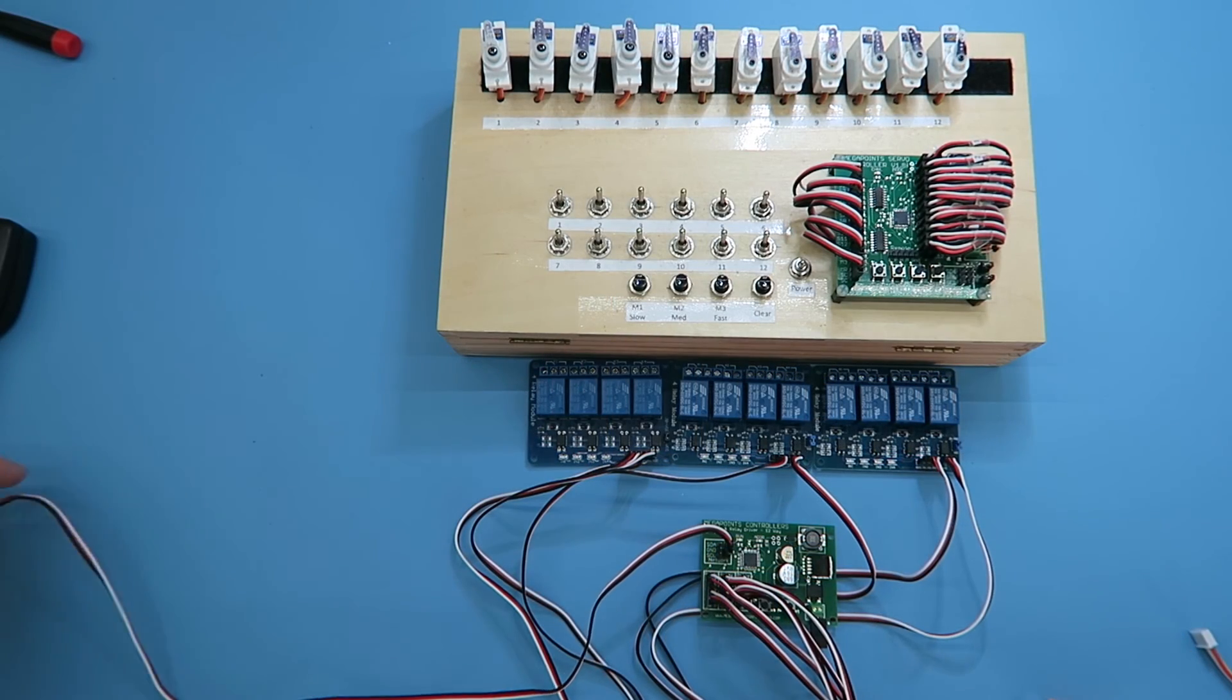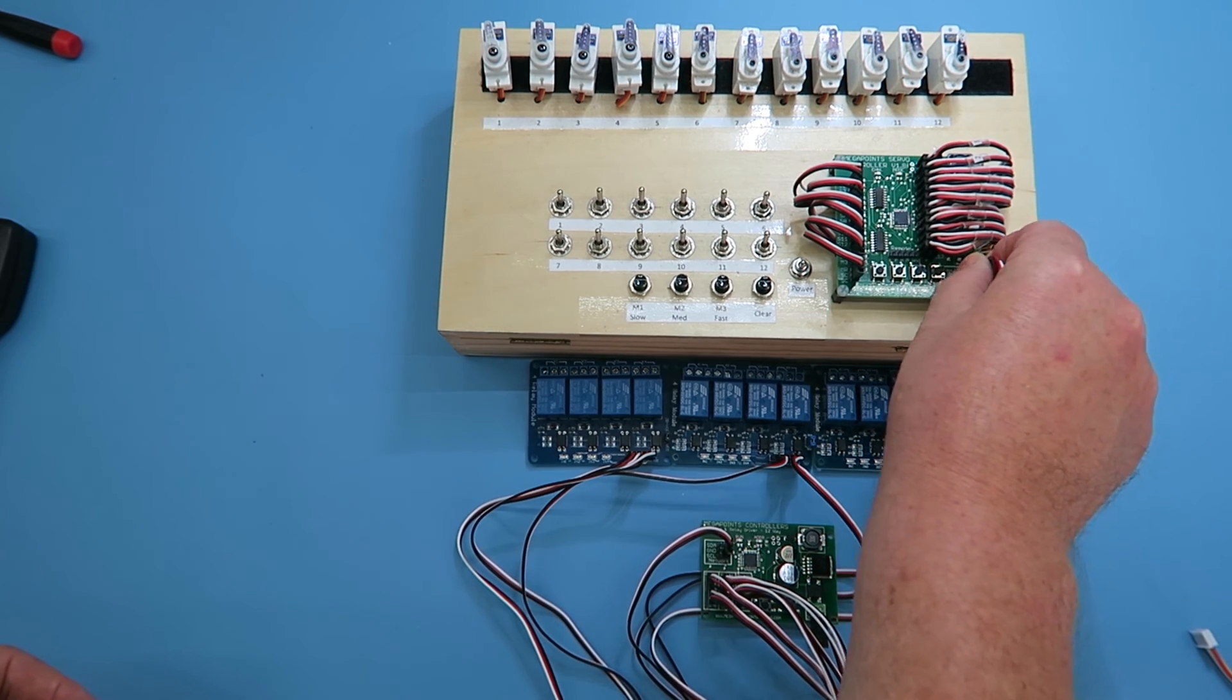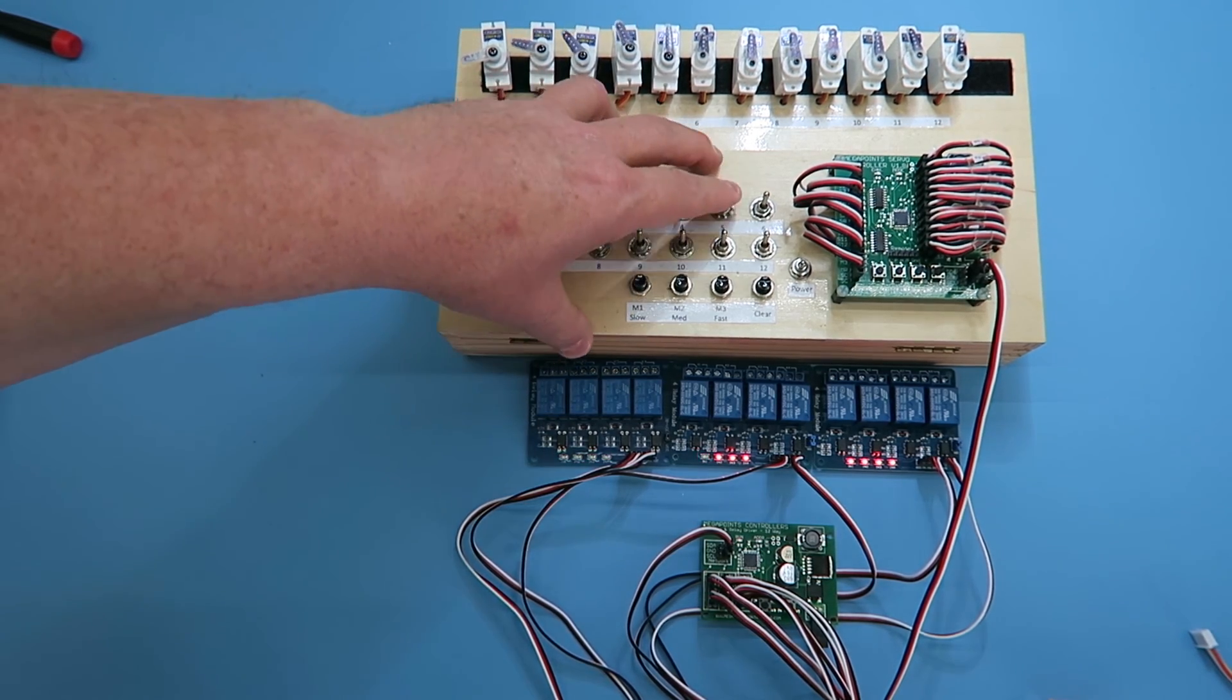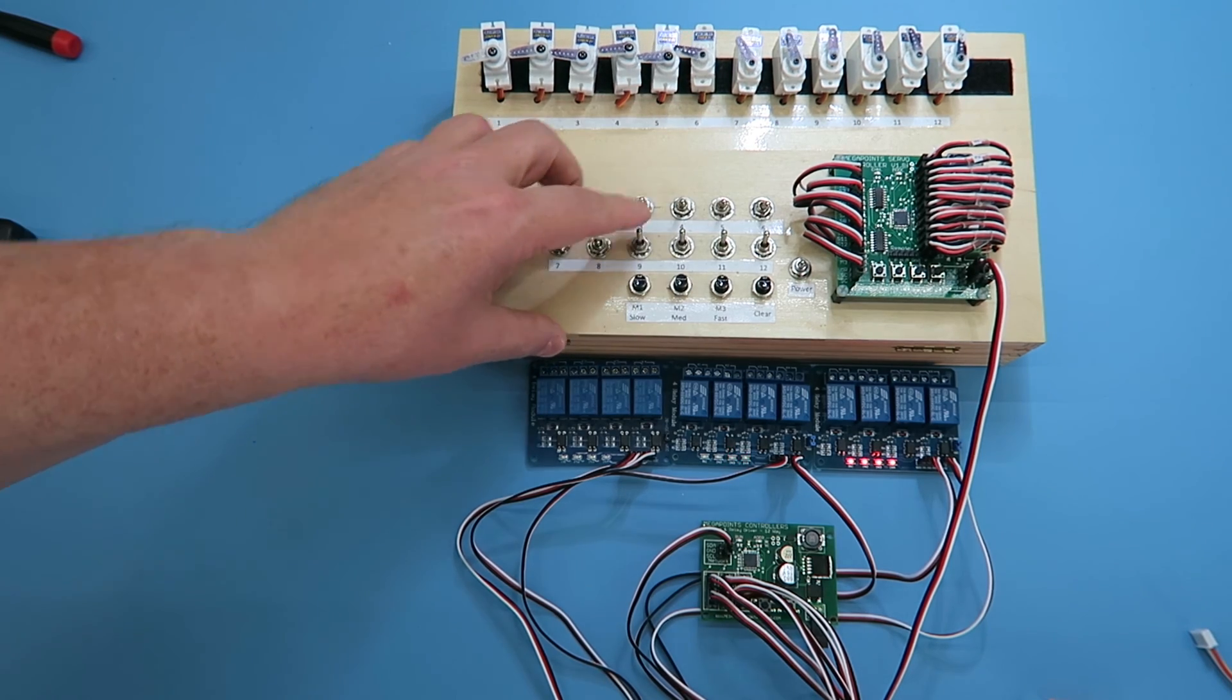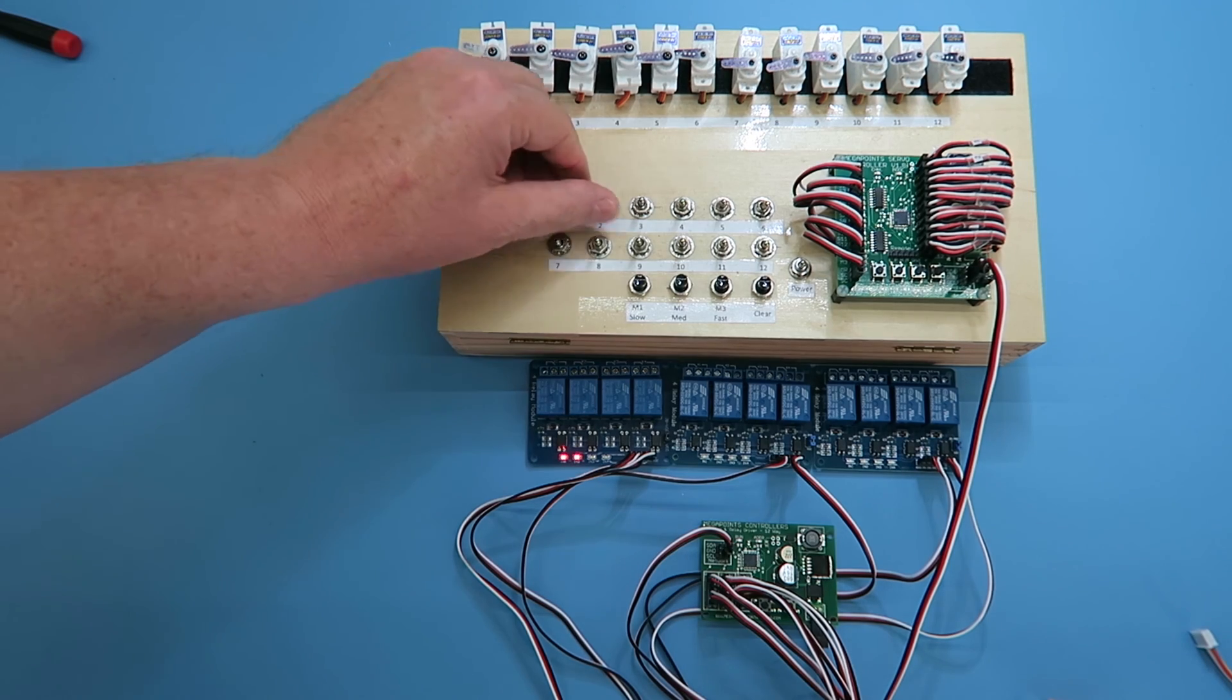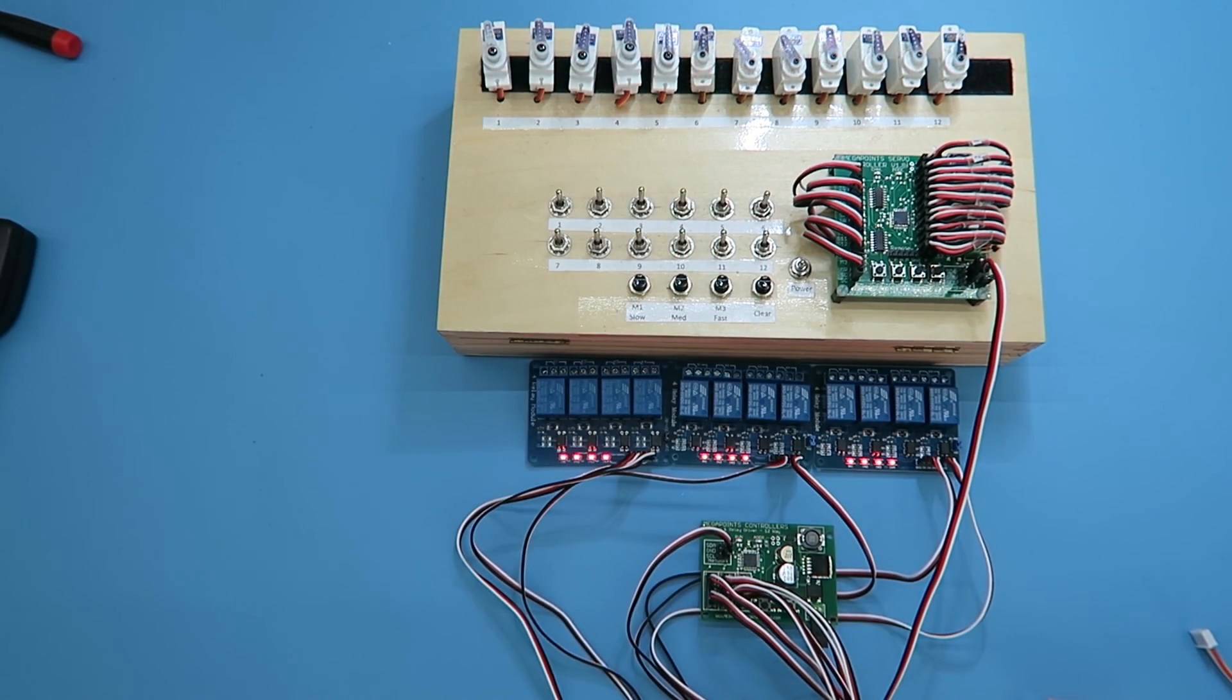One of the most simple use cases for the relay driver is if you take the driver board and just plug it into a servo controller that's using toggle switches. As you flick the toggle switch you can see each of the relays being switched on or off so you're getting frog polarity switching using a relay without using a multi-panel or a DCC module so it works in good old-fashioned analog mode as well. Thanks for watching.